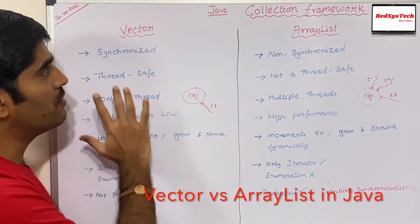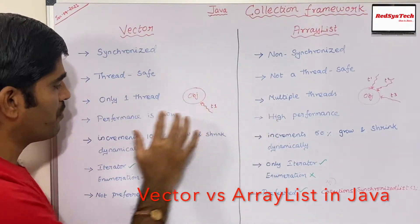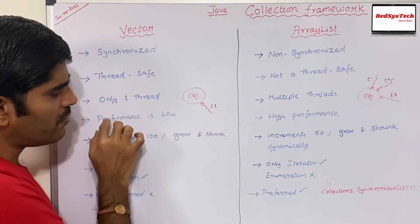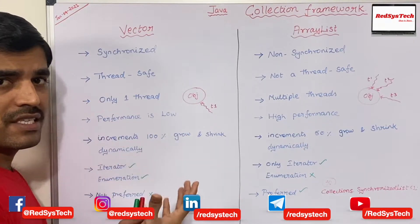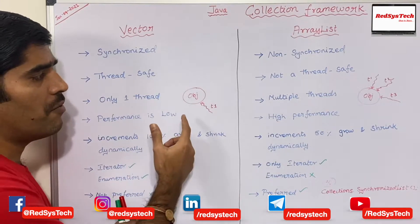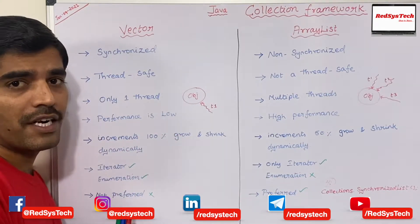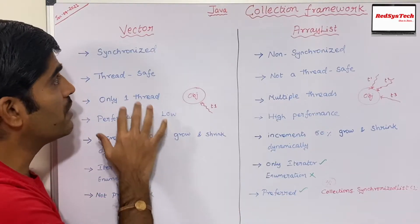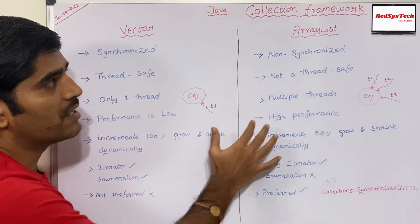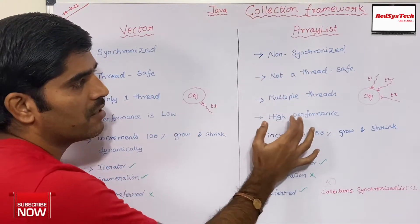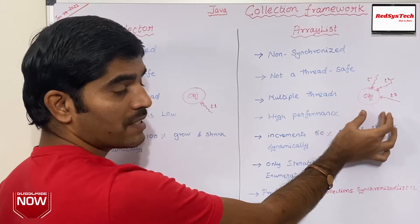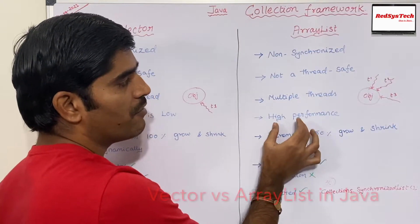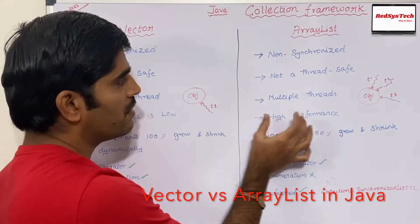So these are the differences between Vector and ArrayList. And because of this, the performance of Vector is very low. The reason is that if I want to make multithreading work in a better way, I can't do it in Vector. But in terms of ArrayList, because multiple threads can able to access the object, the performance will definitely be higher than Vector.